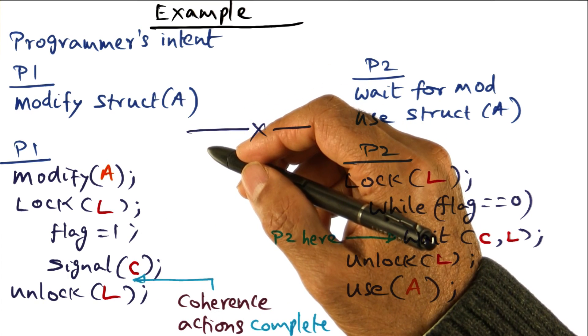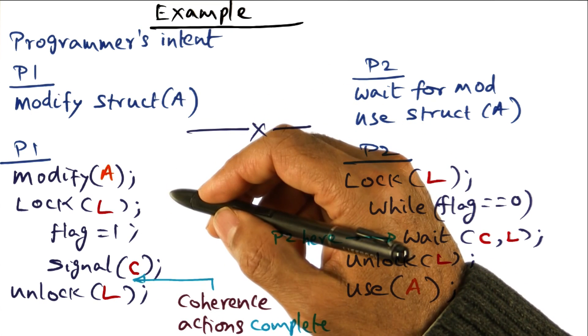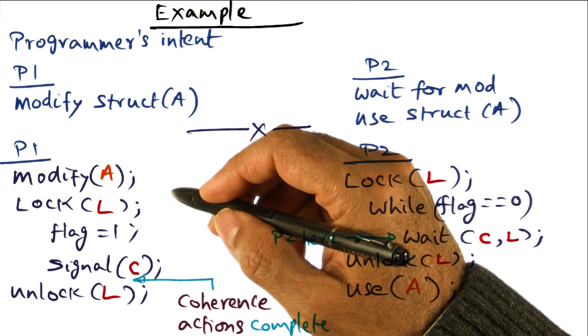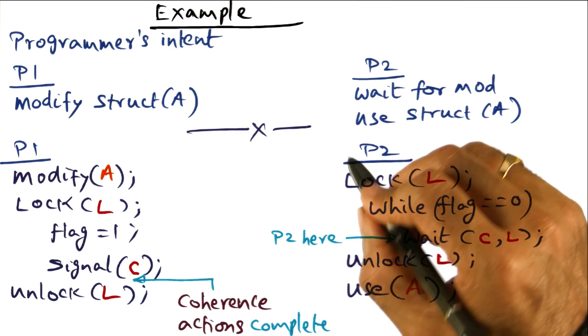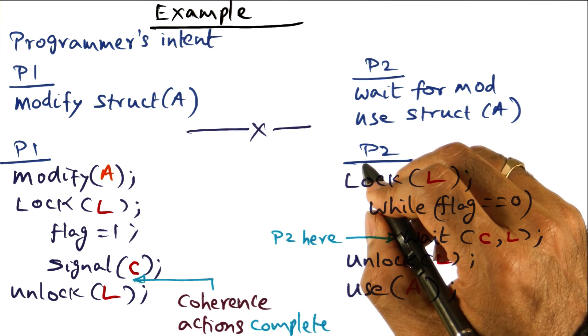So that's the intent of the RC memory model and that's how you can exploit computation going on in parallel with communication if the memory model is an RC memory model.